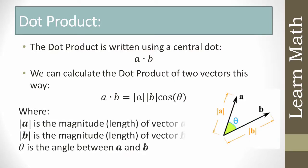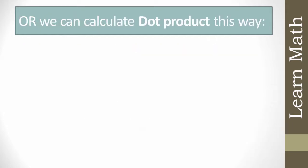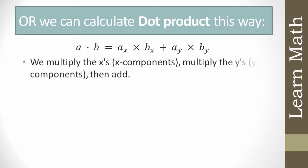Here |a| is the magnitude of vector a, |b| is the magnitude of vector b, and θ is the angle between vector a and vector b. Alternatively, we can calculate the dot product by multiplying the x-components and y-components. Both methods work and the result is a scalar number, not a vector.